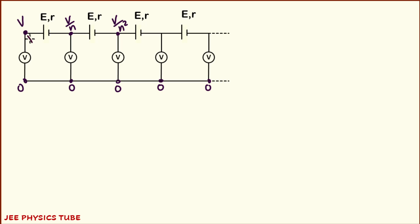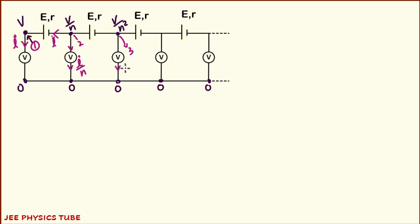Let us give these points some numbers: this is point one, this is point two, and this is point three. In the leftmost part, let us say the current is I; here the current will also be I because there is no junction in between. In the second voltmeter, the current will be I by N. This is because the potential is 1 by N times, so the current must also be 1 by N times, since the reading of the voltmeter is essentially current times resistance. And since all the voltmeters are of the same resistance — they are identical — the current must be forming a GP. Similarly, in this one the current will be I by N square, and so on.